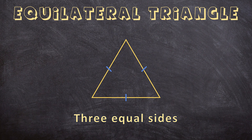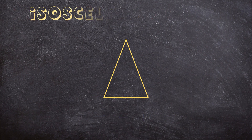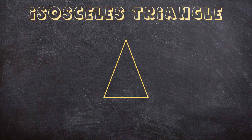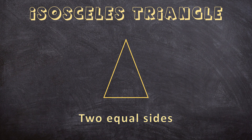So this can also be a way to indicate that this is an equilateral triangle. Now let's look at this triangle — this is an isosceles triangle. For this type of triangle, two sides of the triangle will be equal. So we have two sides of 5 meters that are equal, and then another side of 2 meters that's not equal to the other two sides.